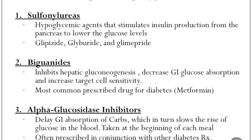There are six classes of drugs that target type 2 diabetes. The first is sulfonylureas — a hypoglycemic agent that stimulates insulin production from the pancreas to lower blood glucose levels. Examples of drugs in this class include glipizide, glyburide, and glimepiride.